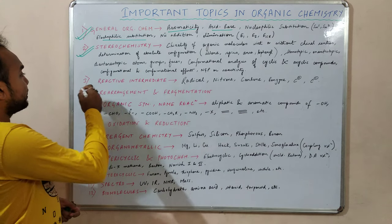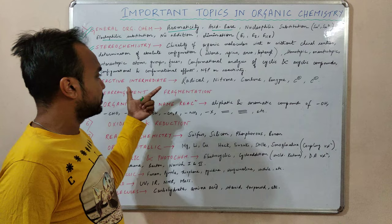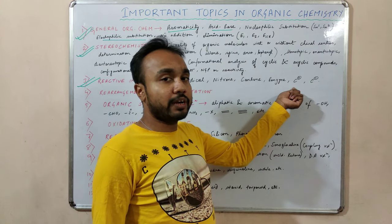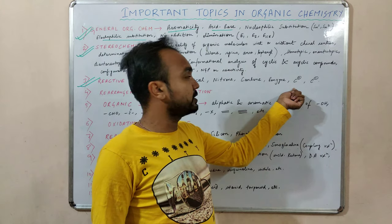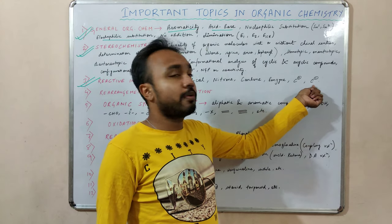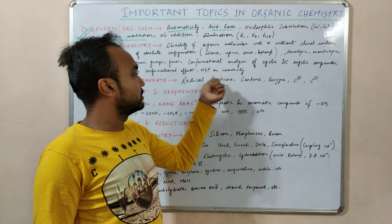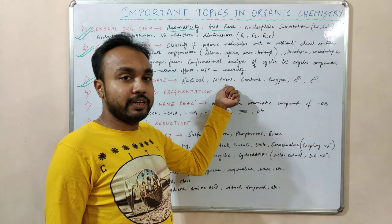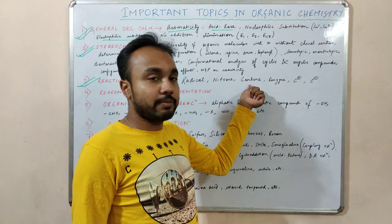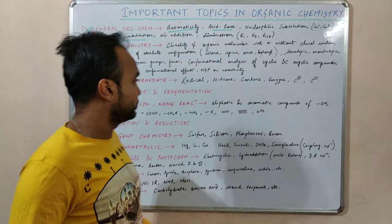The next part is reactive intermediates. This part consists of carbocations and reactions involving carbocations, carbene reactions, radical reactions, nitrene compounds, carbanion chemistry, and benzyne intermediates.